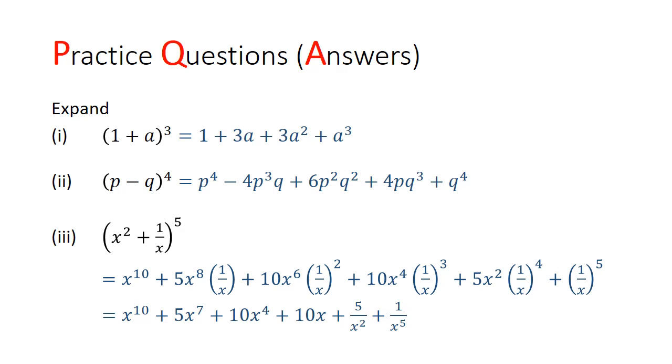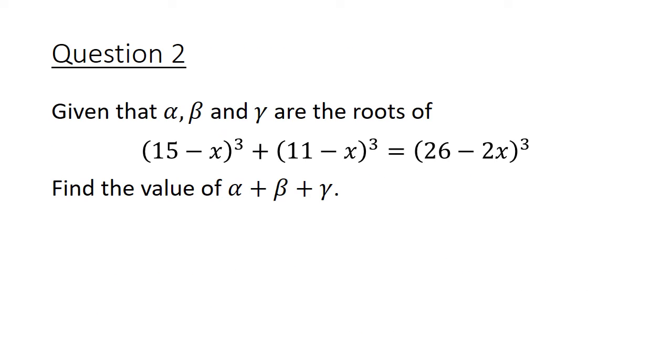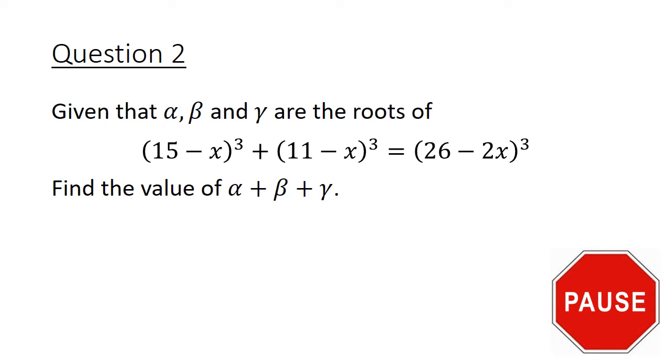Question number 2. Given that alpha, beta and gamma are the roots of the equation (15-x) cubed plus (11-x) cubed equals (26-2x) cubed, find the values of the sum of the roots alpha plus beta plus gamma. Pause the video here and give this question a good try.